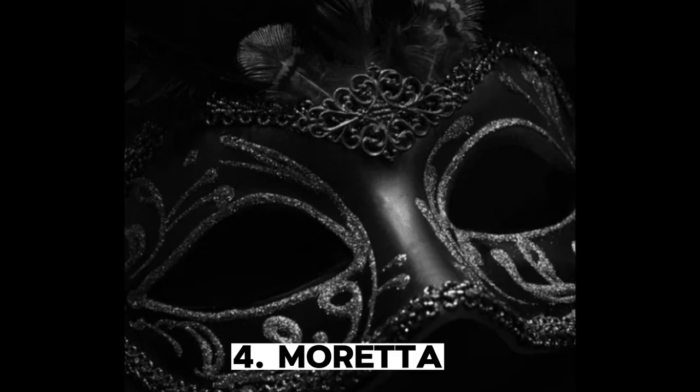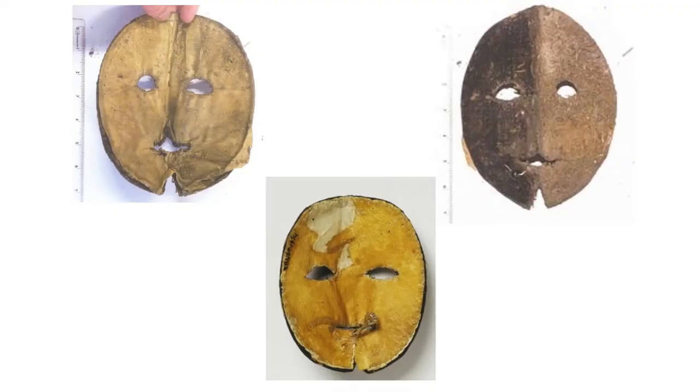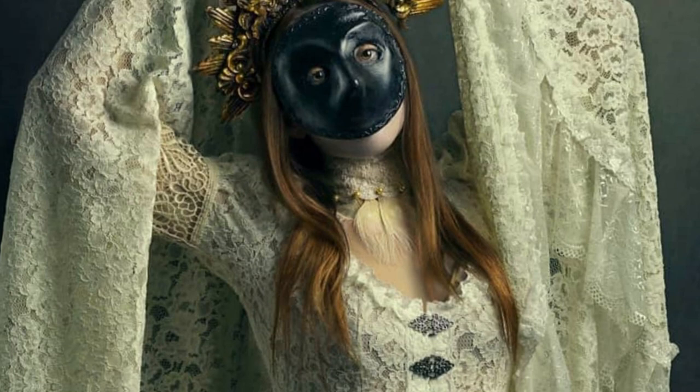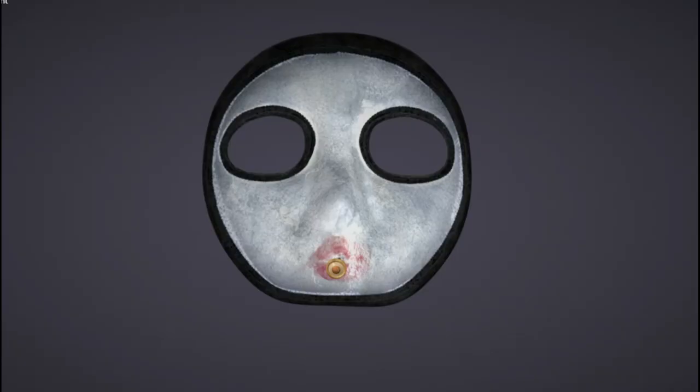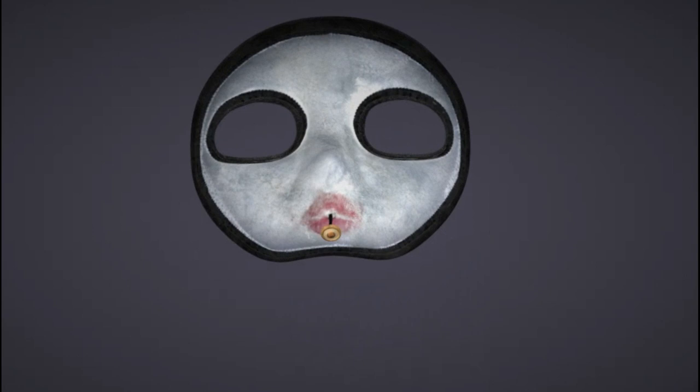The Moretta is an oval-shaped mask mostly made with black velvet, usually worn by women. It was invented in France, but it became popular when worn at the Venetian carnival as it brought out feminine features. This mask had a unique feature — it was strapless, so the women had to hold it in their mouths by biting a small button inside the mask. So if that woman had to speak, the mask would fall off and her identity would be disclosed. But it was a free choice for the women whether they wanted to wear it or not.